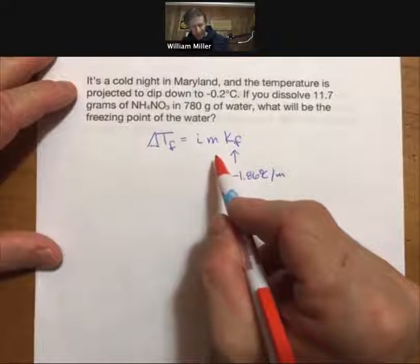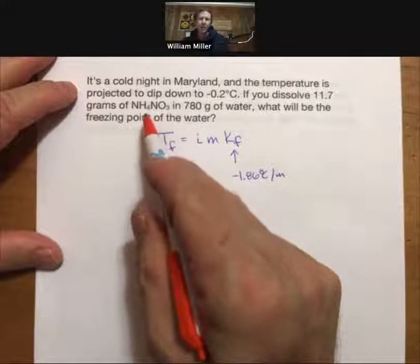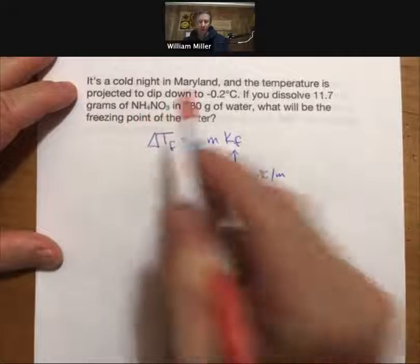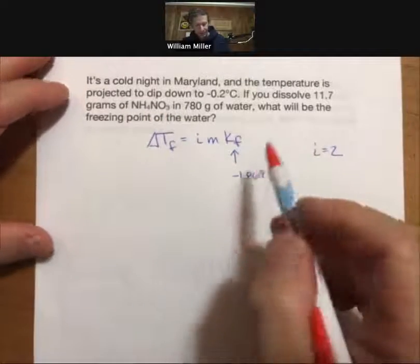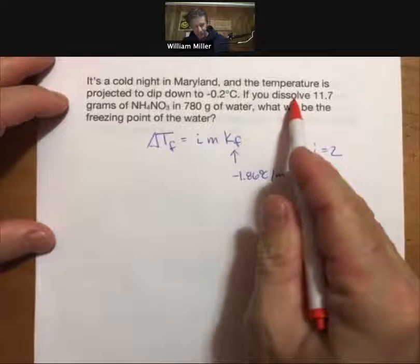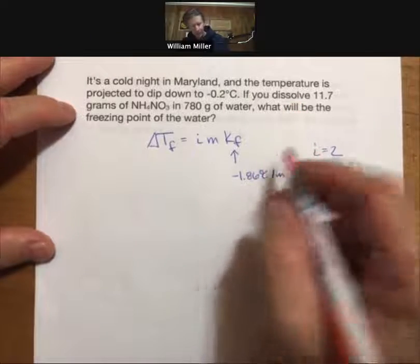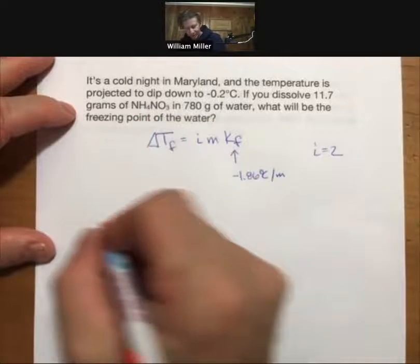We don't know our molality yet. We do know that ammonium nitrate breaks up into two ions, and now we need our molality. Well, we have 11.7 grams of ammonium nitrate.